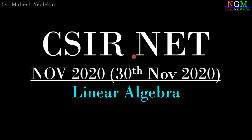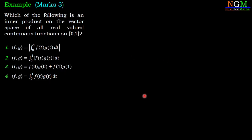In this video we are going to discuss a problem from GATE CSI November 2020 on linear algebra. The problem asks: which of the following is an inner product on the vector space of all real-valued continuous functions on the closed interval [0,1]? The four options are: (1) |∫₀¹ f(t)g(t)dt|, (2) ∫₀¹ |f(t)|g(t)dt, (3) f(0)g(0) + f(1)g(1), and (4) ∫₀¹ f(t)g(t)dt.